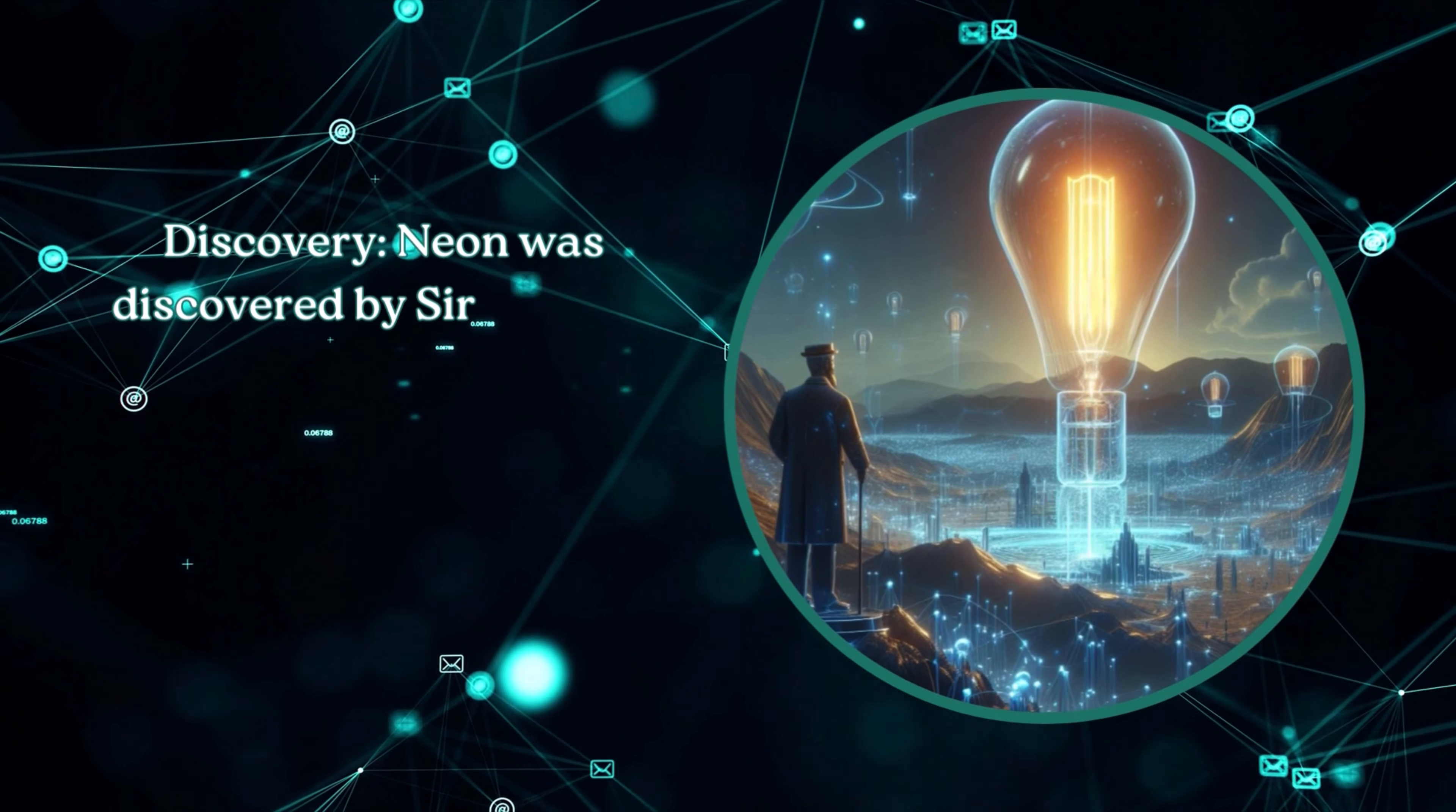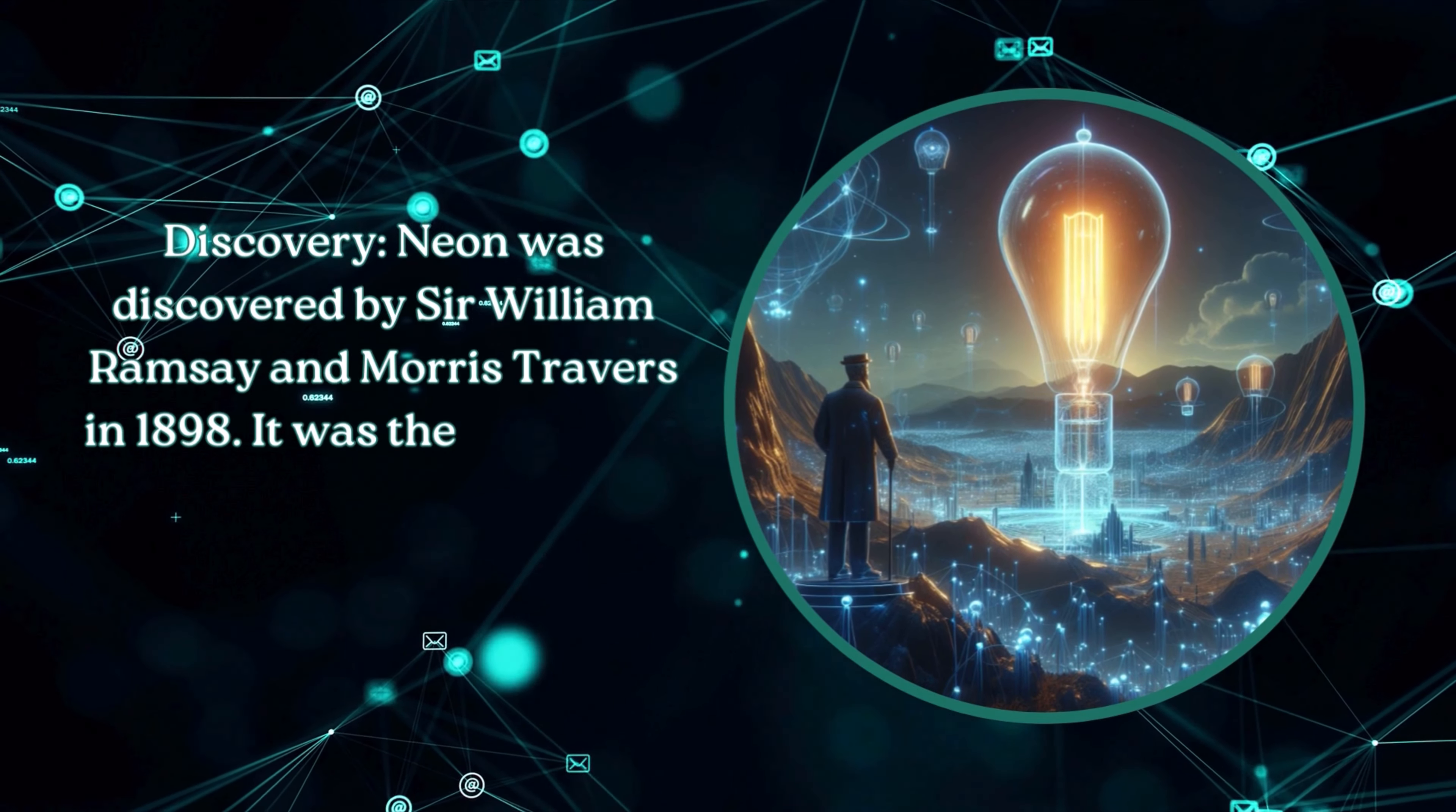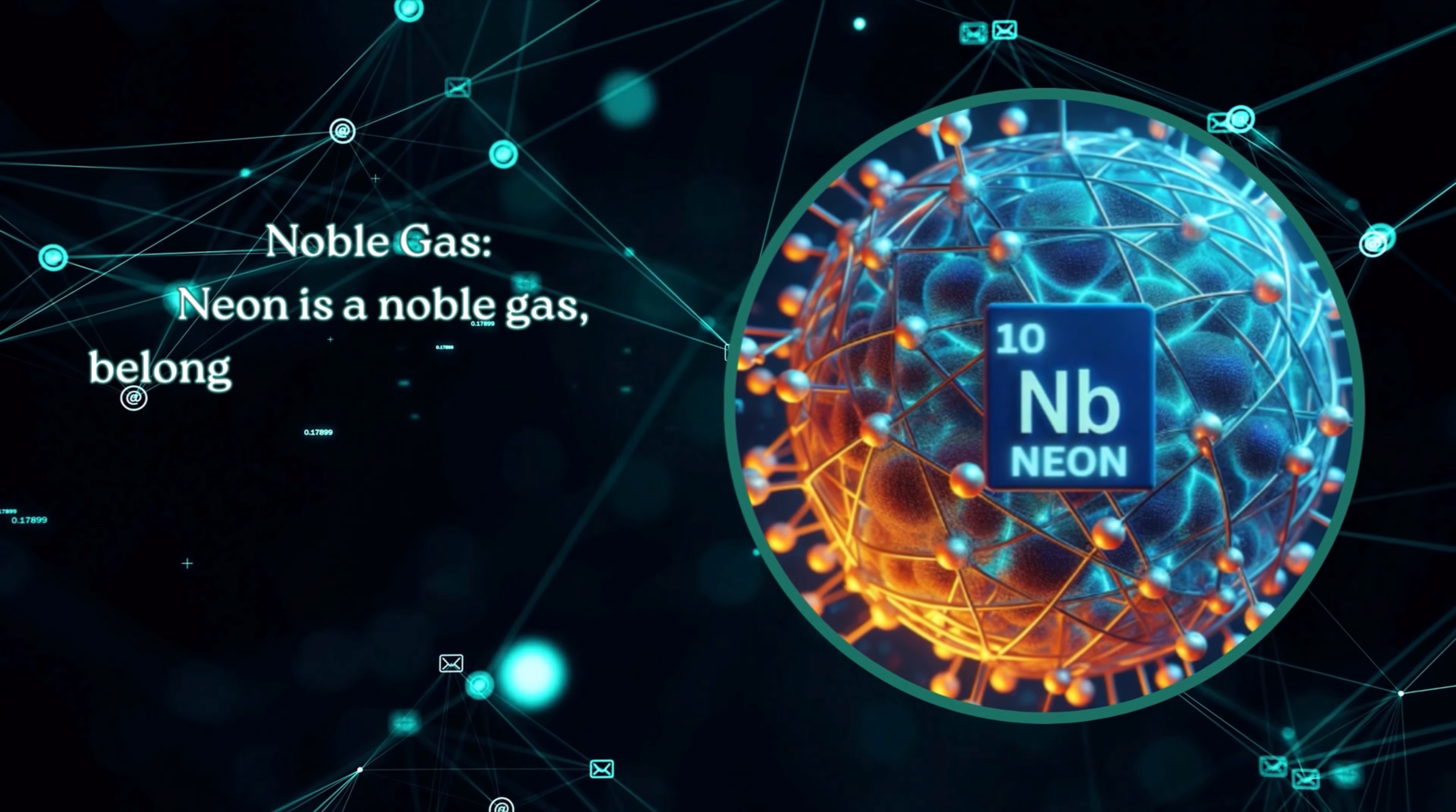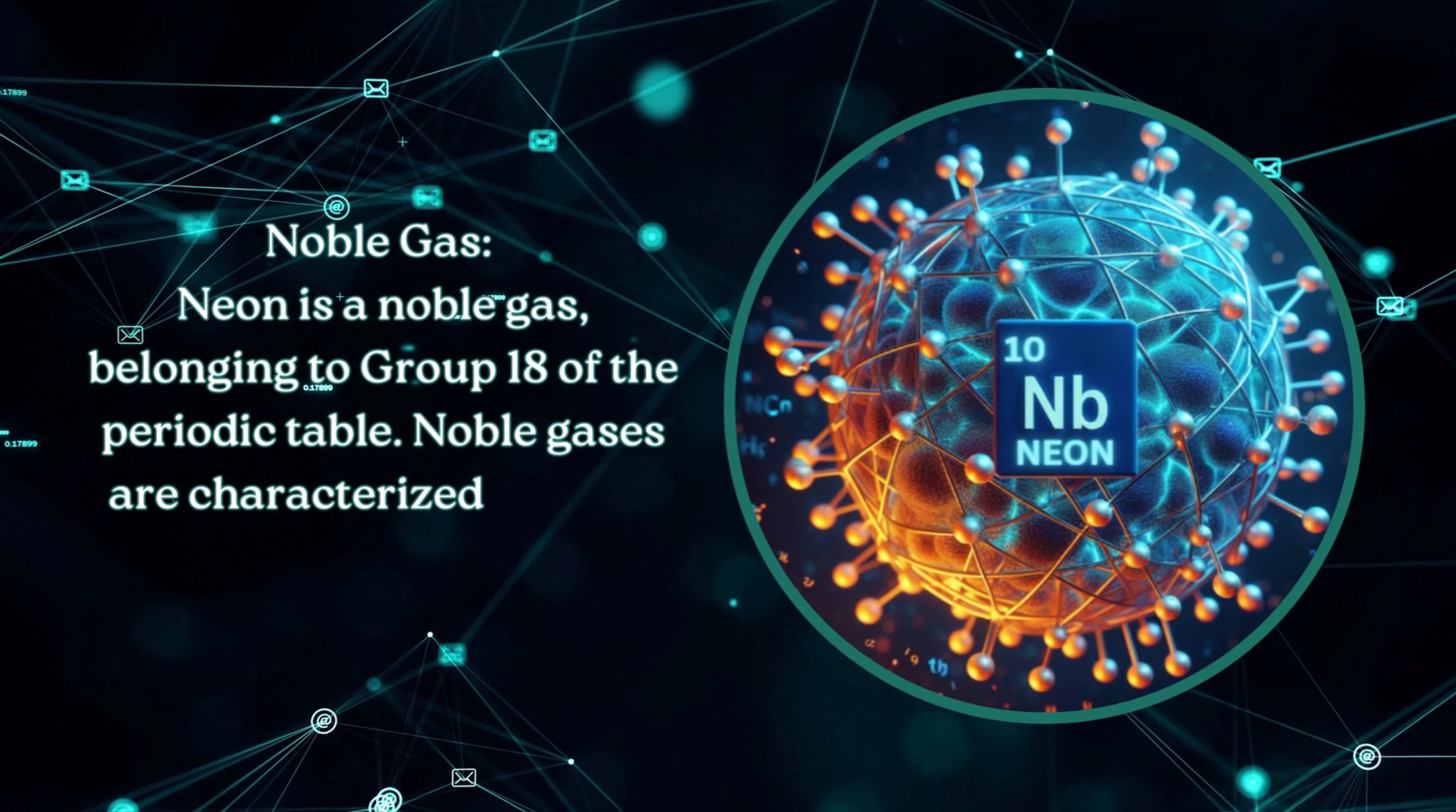Neon was discovered by Sir William Ramsay and Morris Travers in 1898. It was the first noble gas to be isolated. Neon is a noble gas belonging to group 18 of the periodic table. Noble gases are characterized by their low reactivity and full outer electron shells.